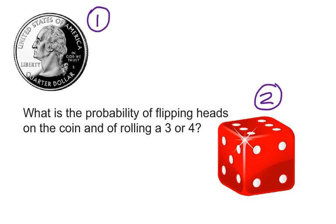What is the probability of flipping heads on the coin and of rolling a 3 or a 4? That's a great question. Let's use the probability of compound events to figure it out.